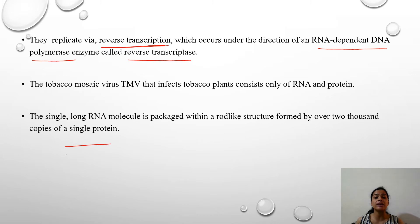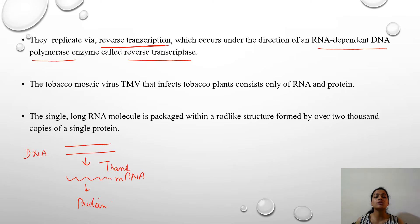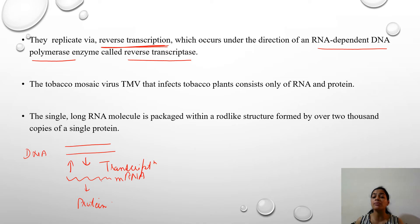Generally, from a DNA molecule, RNA is produced — this process is called transcription — and then proteins are made with the help of translation. But in these particular viruses, they have a process known as reverse transcription. They have RNA as their genetic material and within the host, they make DNA out of their own genetic material. This transcription occurs in the reverse direction, which is why the process is called reverse transcription.